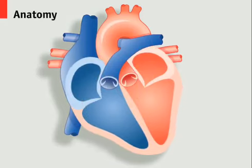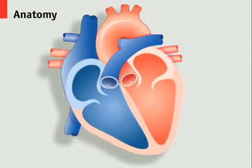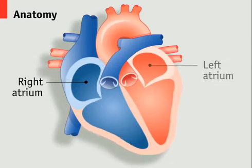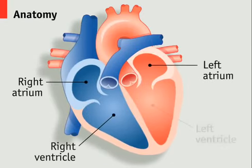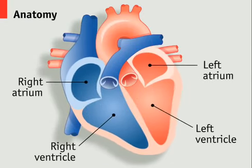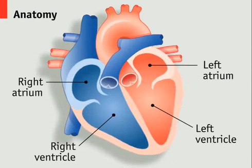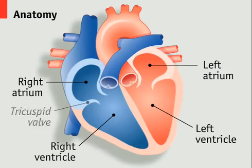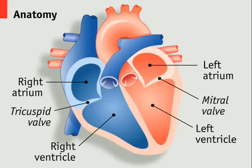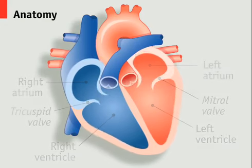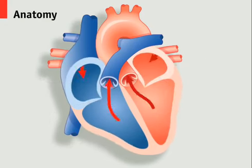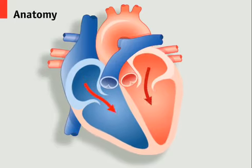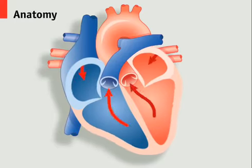The heart is made up of four chambers: two atria and two ventricles. On each side, the atrium is connected to the ventricle by a one-way valve. Blood is pumped as these chambers contract and relax in turn.